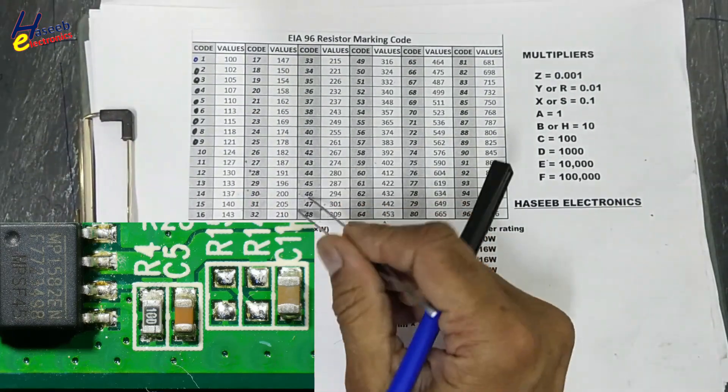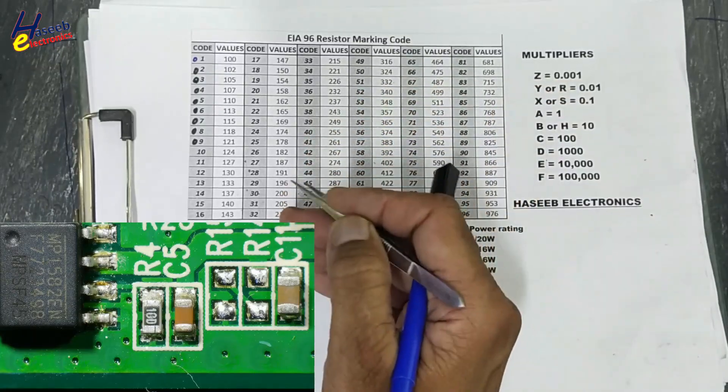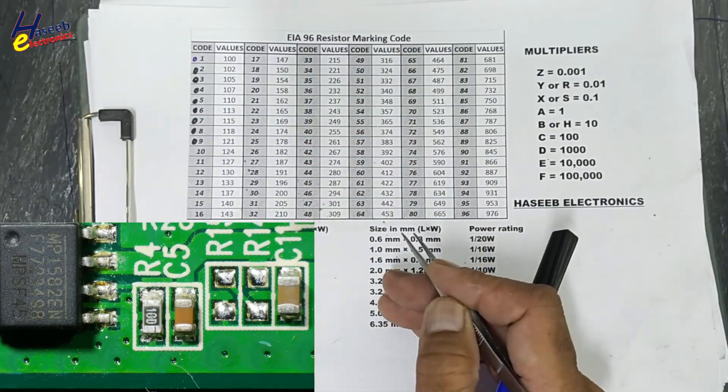To decode these resistors you will need the EIA96 resistor marking code chart. You will find the link in the video description and you can download it.